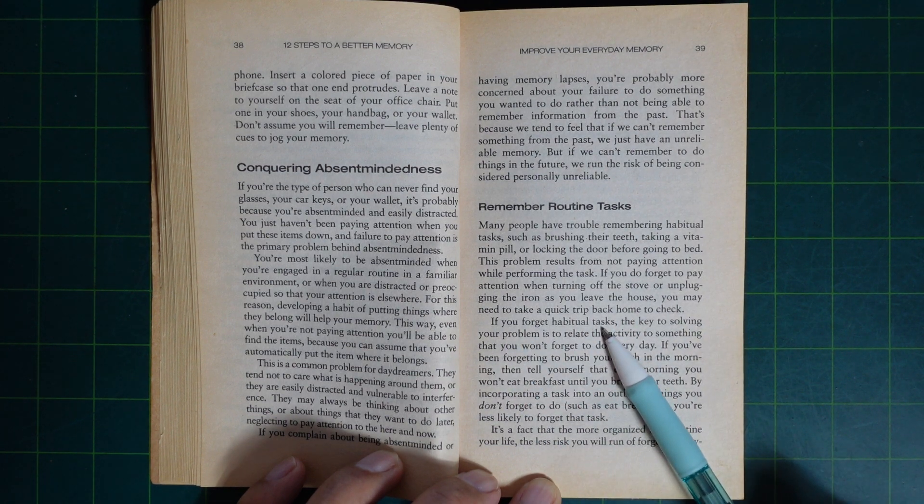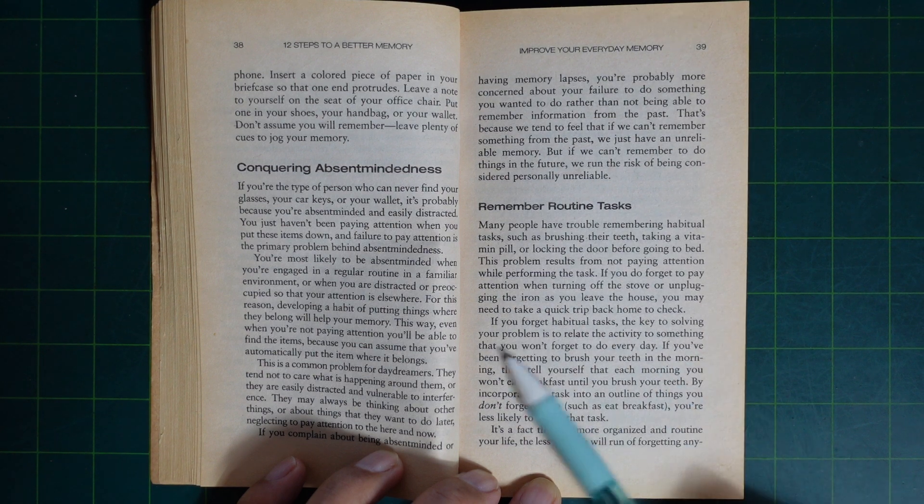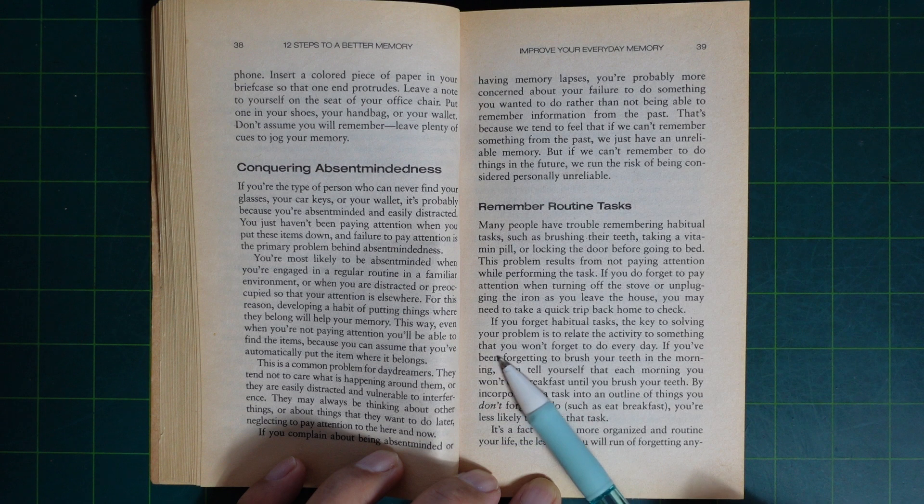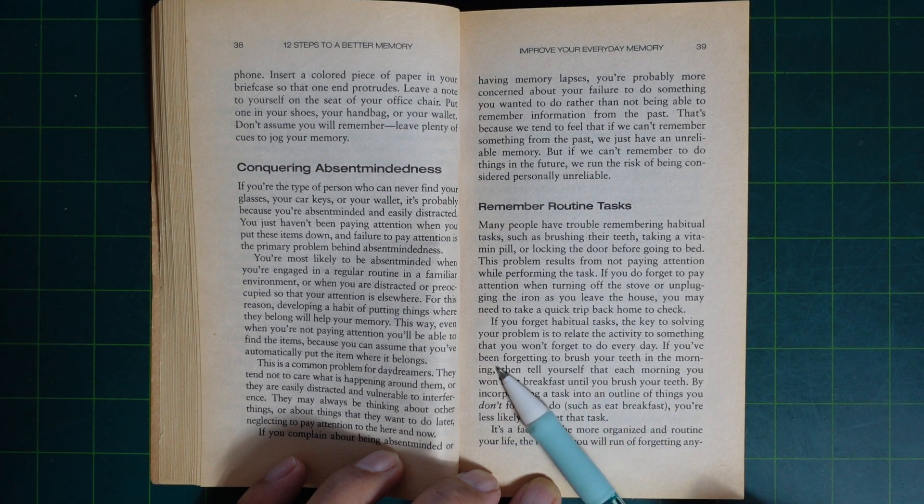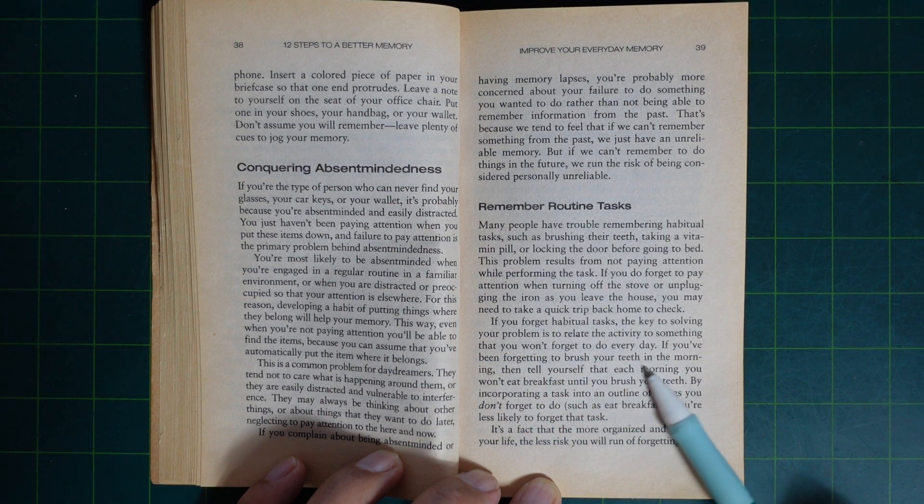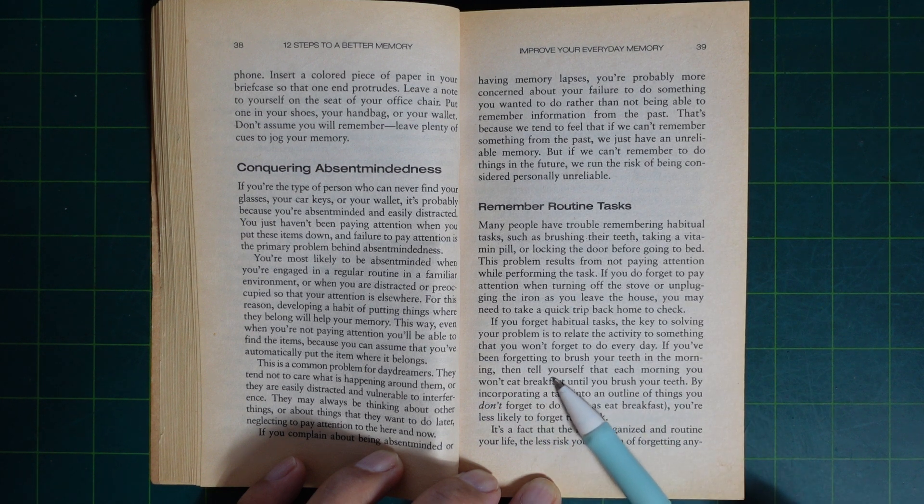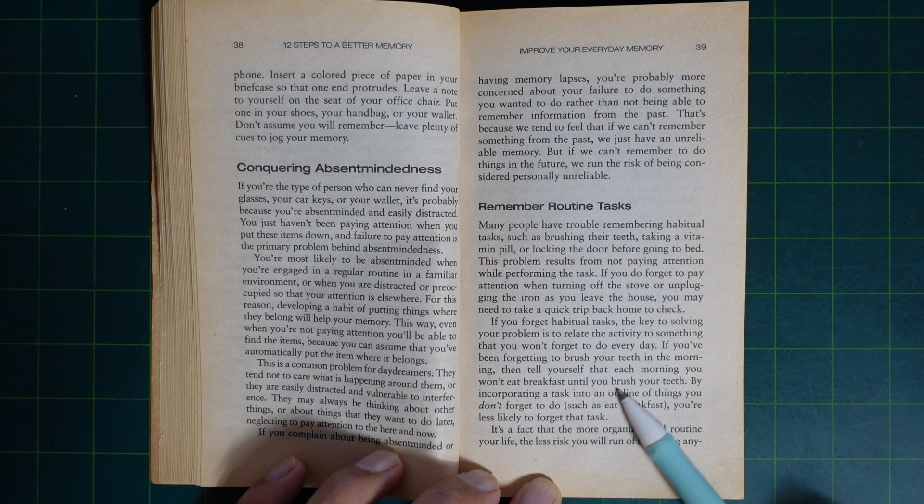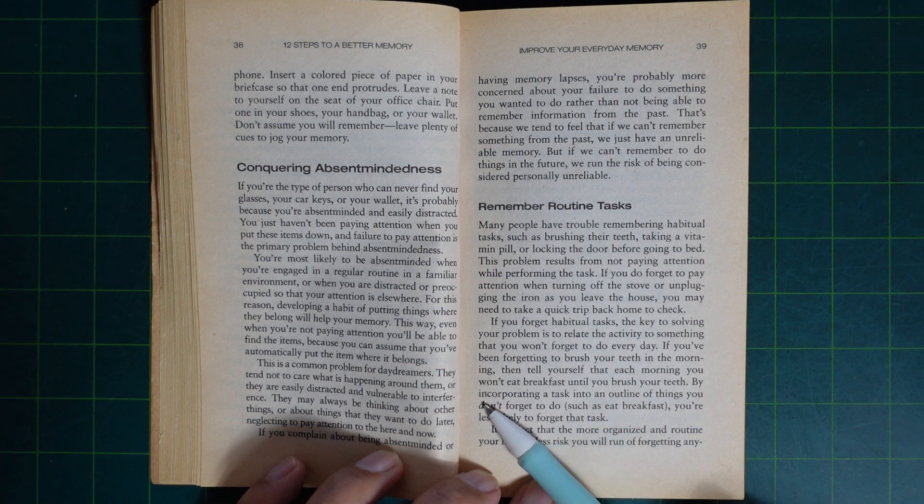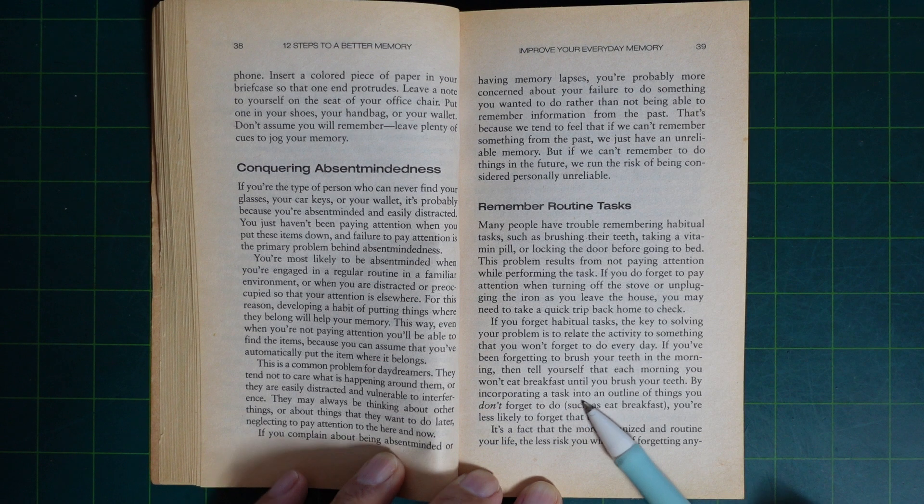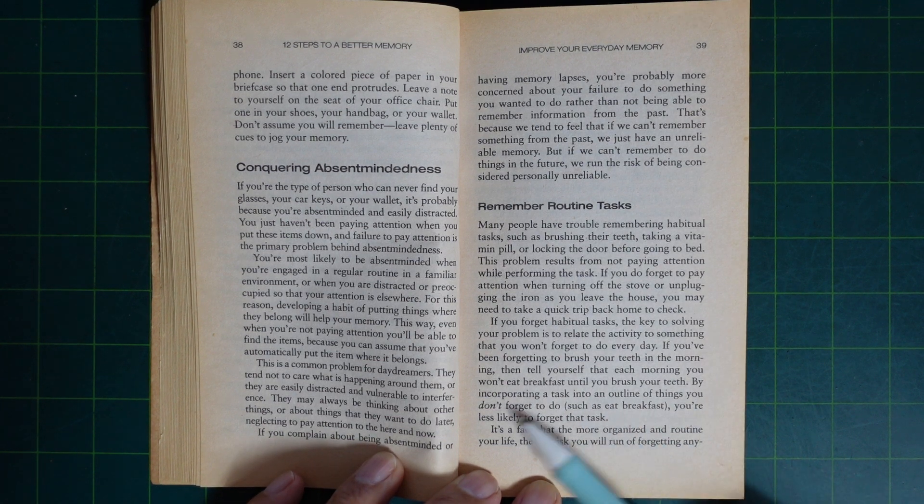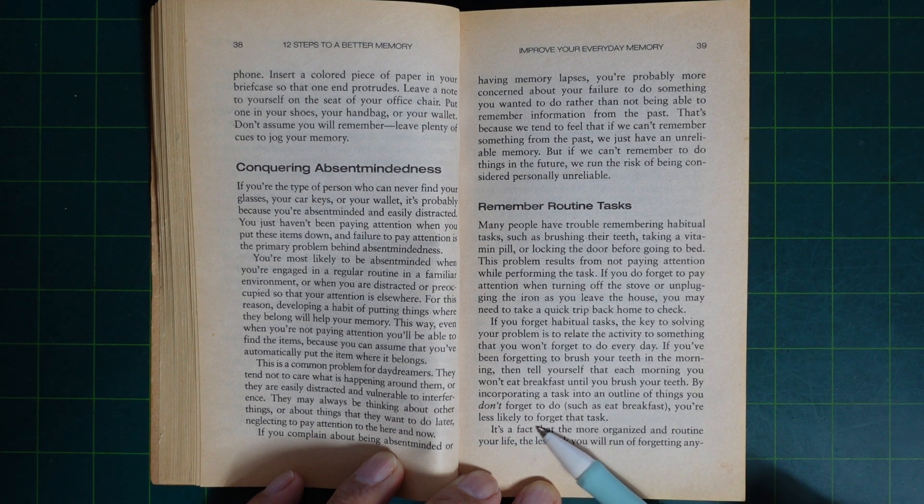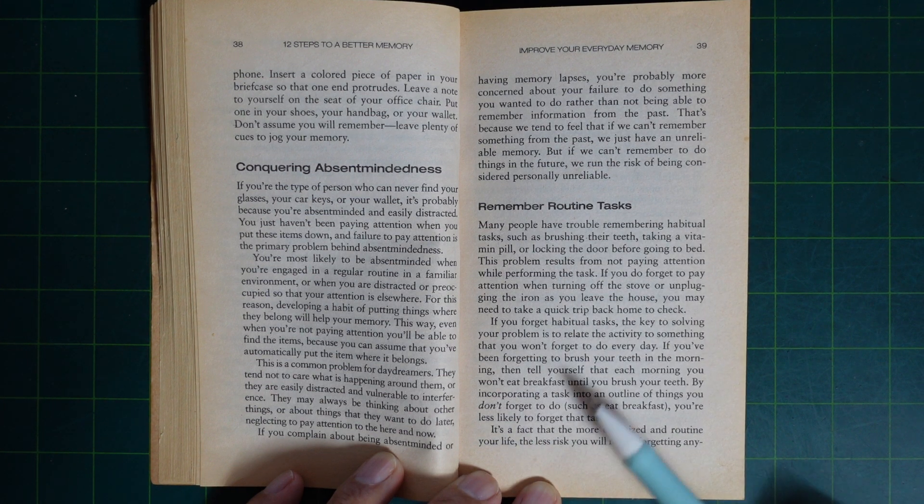If you forget habitual tasks, the key to solving your problem is to relate the activity to something that you won't forget every day. If you've been forgetting to brush your teeth in the morning, then tell yourself that each morning you won't eat breakfast until you brush your teeth. By incorporating a task into a routine of things you don't forget to do, such as eat breakfast, you are less likely to forget to do that task.